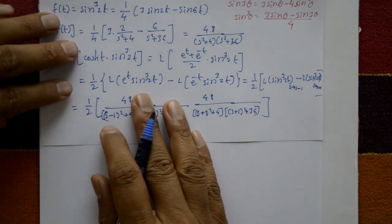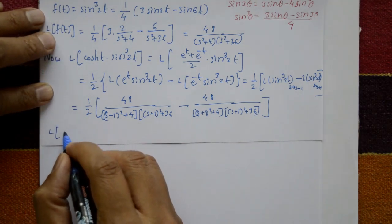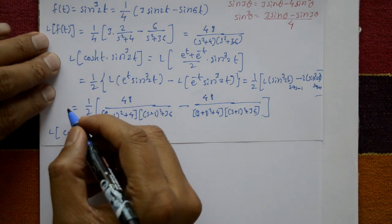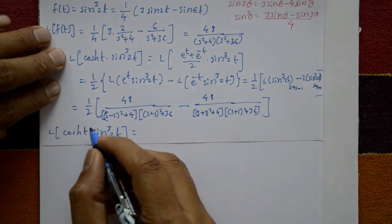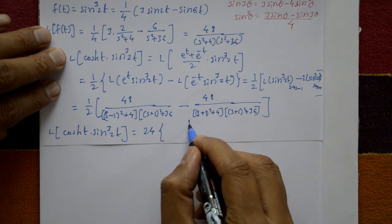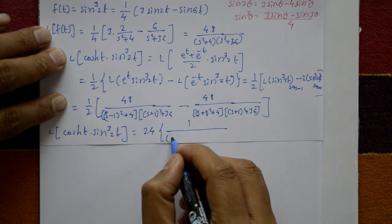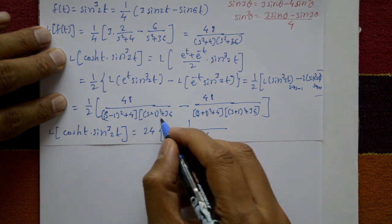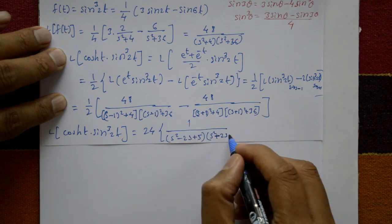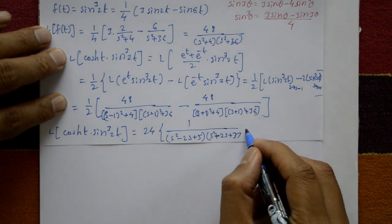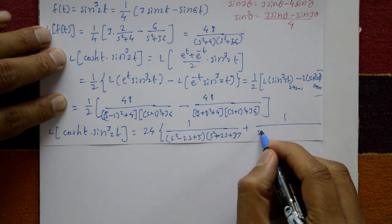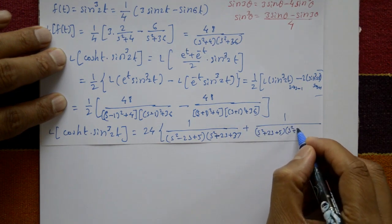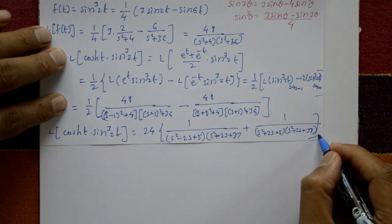Finally, the Laplace transform of cosh(t)·sin³(2t) equals 24 times the quantity: 1/[(s²−2s+5)(s²−2s+37)] minus 1/[(s²+2s+5)(s²+2s+37)]. This is the required solution.